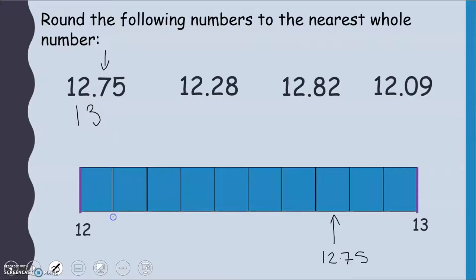12.28, well, 12.1, 12.2. So 12.28 is probably somewhere about here. And I hope we can all agree that that is much closer to 12. So this 2 is telling us to keep our 12 the same.